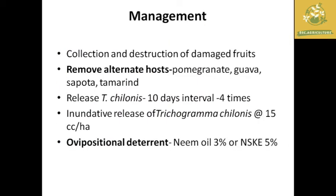The infested fruits turn black later due to secondary infections in Amla. Management includes collection and destruction of damaged fruit, removal of alternate hosts like pomegranate, guava, or tamarind from nearby fields. Release of Trichogramma at 10-day intervals for four times, and release of Trichogramma chilonis at 15 cc per hectare. Ovipositional deterrents like neem oil 3% or neem seed kernel extract 5% spray are also effective.